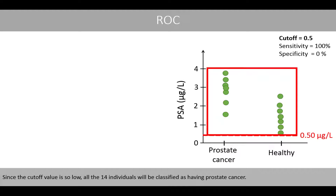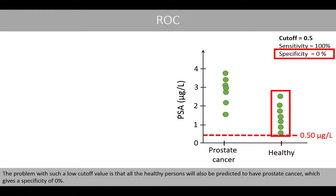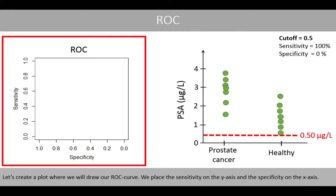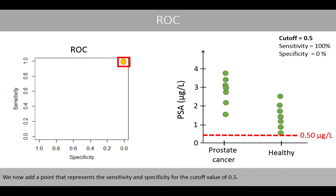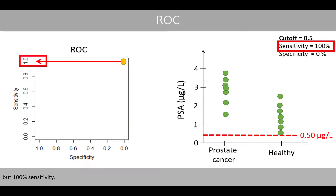Since the cutoff value is so low, all 14 individuals will be classified as having prostate cancer. Since all individuals who have prostate cancer are correctly predicted, the sensitivity is 100%. However, all healthy persons will also be predicted to have prostate cancer, which gives a specificity of 0%. We place sensitivity on the y-axis and specificity on the x-axis, and add a point representing 0% specificity and 100% sensitivity.